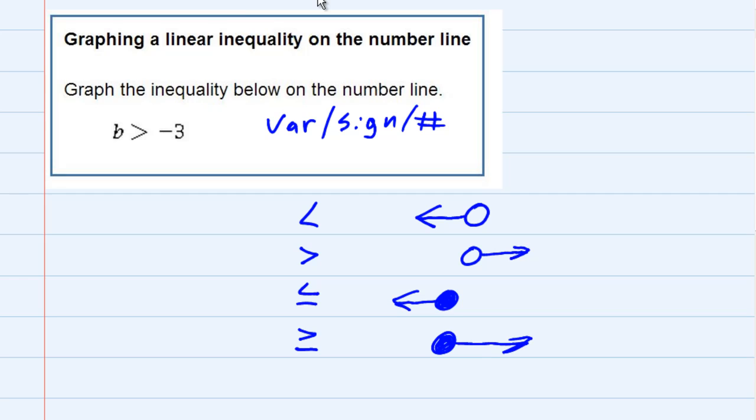So, the nice thing about this is that the direction of the arrow matches the way that the line is going. So, we can definitely use this to our advantage whenever we're trying to graph it. There is one requirement, though.